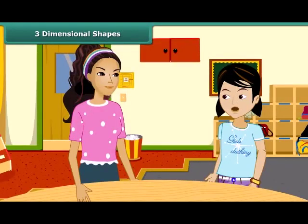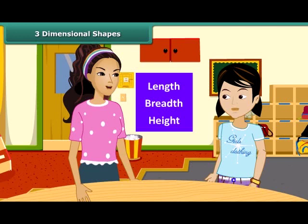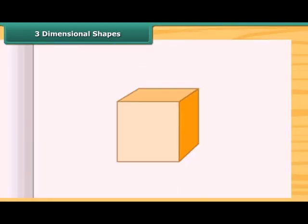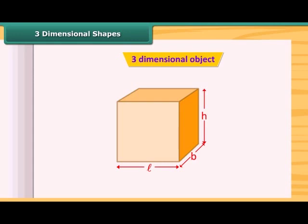What are three-dimensional shapes? A solid object having three measurements like length, breadth, and height are called three-dimensional objects. Look at this cuboid. It has length, breadth, and height. So this is a three-dimensional object.